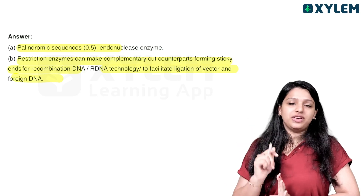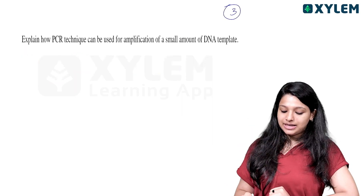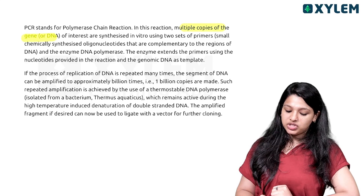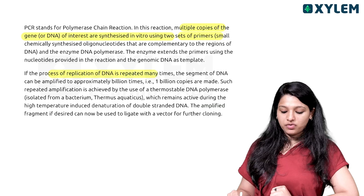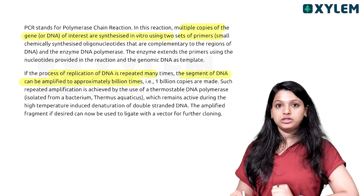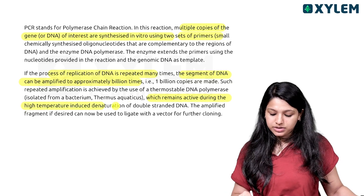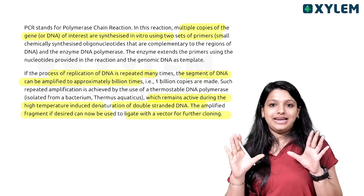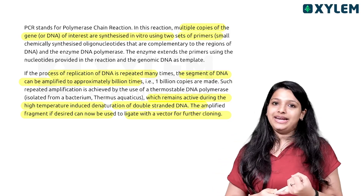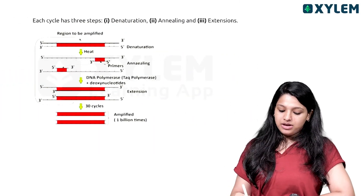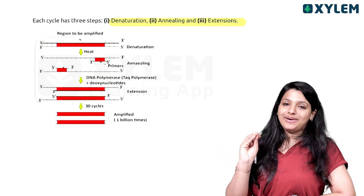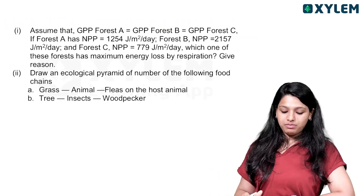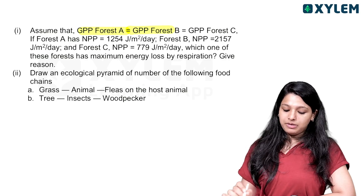PCR multiplies copies of the DNA of interest synthesized in vitro using sets of primers. If the process of replication of DNA is repeated many times, a segment of DNA can be amplified to approximately one billion copies. The enzyme which remains active during the high-temperature-induced denaturation of double-stranded DNA is used. Amplified fragments can then be ligated with the vector for further cloning.